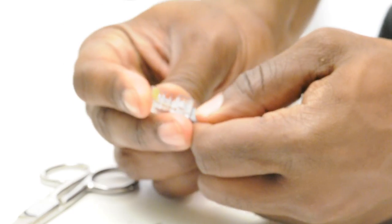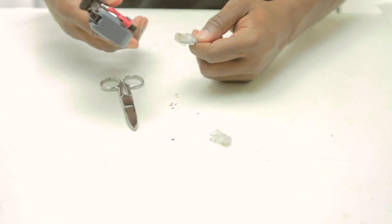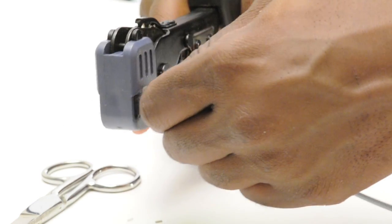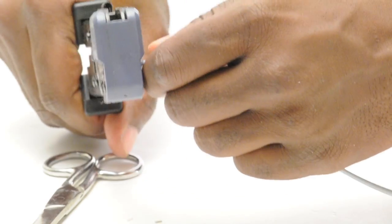Slide the connector onto the cable. Using the crimp tool crimp it down so that the connector fully attaches to the cable.